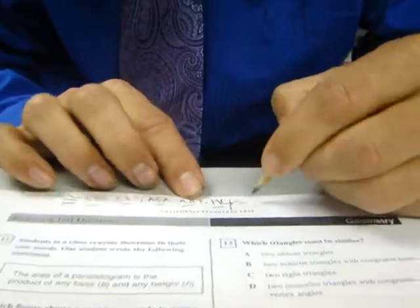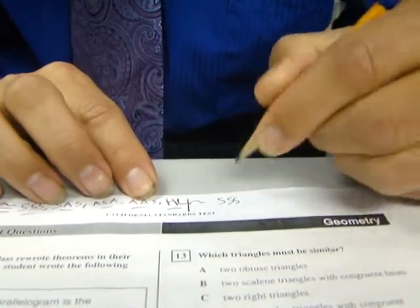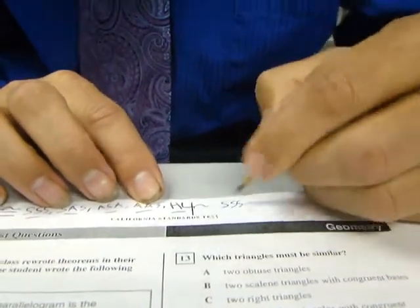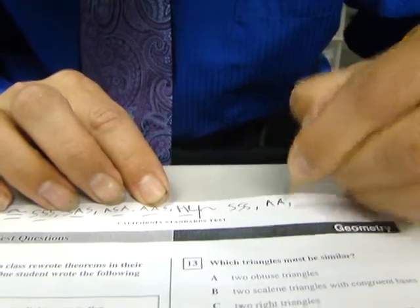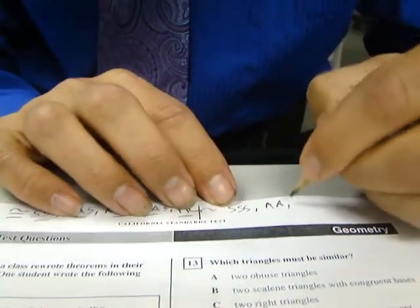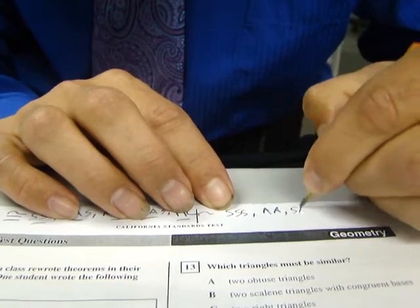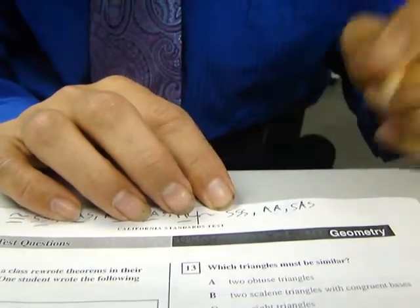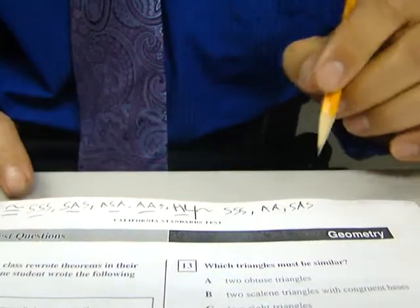Similarity can only be proven in three different ways: side-side-side, where all three sides are proportional; angle-angle, where two angles are congruent; and side-angle-side, where there are two proportional sides with a congruent angle included between them.